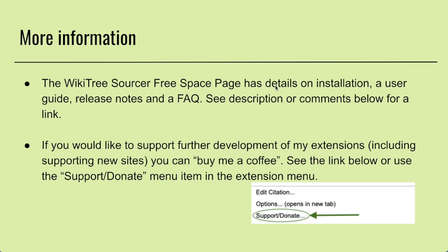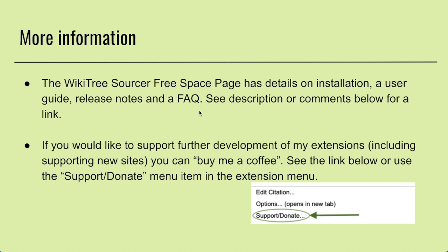So that's it, folks. I'm going to create a bunch of videos on different parts of WikiTree Sourcer, going into more detail and showing all the different options. There's a free space page which has details if you want to read about things. And if you'd like to support further development of my extensions — like supporting new sites — you can buy me a coffee, which is a crowdfunding site. You can get to both of these places within the extension at the bottom of the menu using the support/donate button, which takes you to a submenu. I'll put links in the description below this video as well.